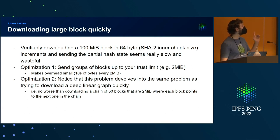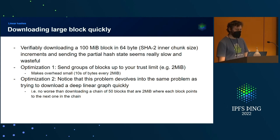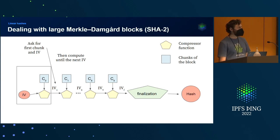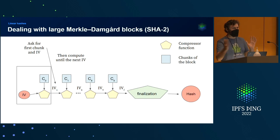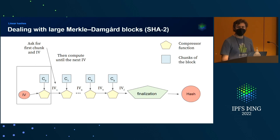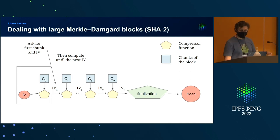One optimization to note: these chunks are like 64 bytes, but you can take groups of 64 bytes and group them all together, since you're just computing the function going forward. You can set those to your limit — like 2 megabytes — and you're sort of off to the races.